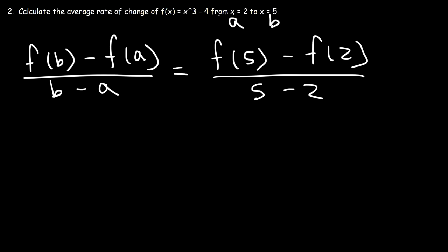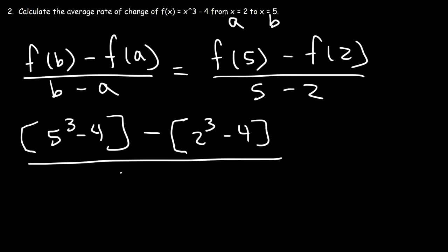So to calculate f(5), we just got to plug it in to that formula. So that's going to be 5³ - 4. And to calculate f(2), it's going to be 2³ - 4. And 5 - 2 is 3.